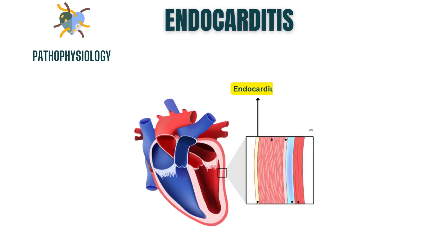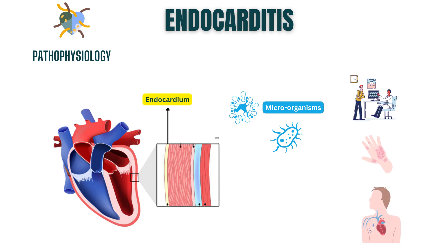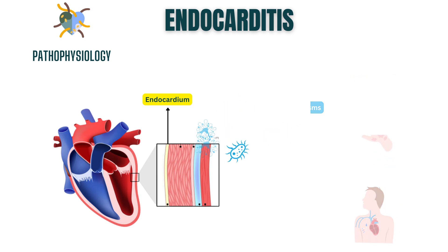The heart's inner lining, called the endocardium, is a vital component in maintaining proper cardiac function. However, it can become vulnerable to an invisible enemy: microorganisms. Endocarditis begins when bacteria, fungi, or other microorganisms gain access to the bloodstream. They hitch a ride through various entry points, such as dental procedures, skin infections, or invasive medical devices. When the microorganisms encounter areas of damaged or abnormal endocardium, they initiate a deadly dance.